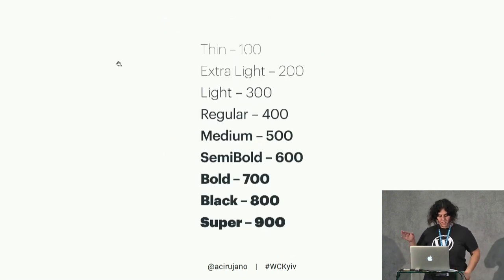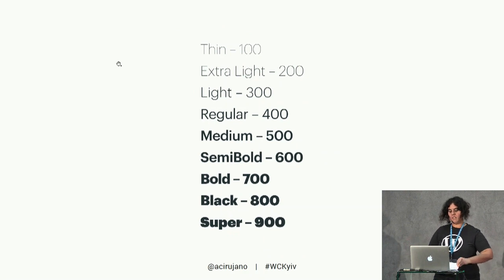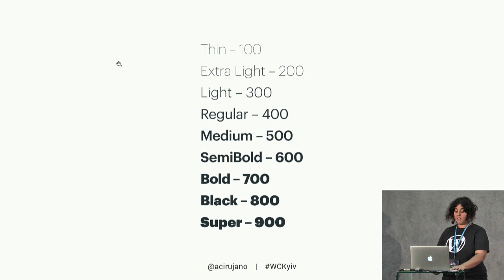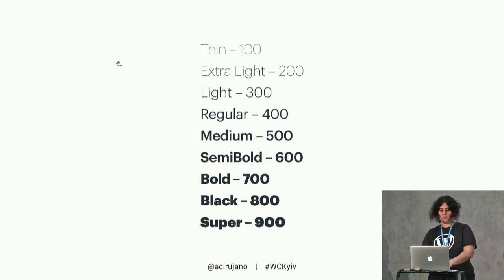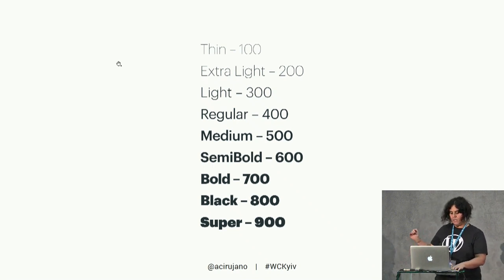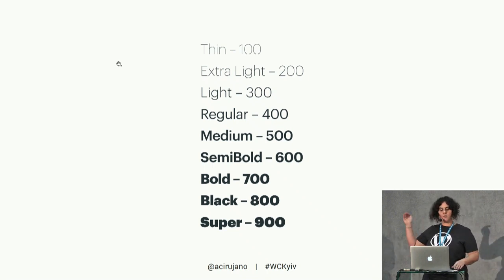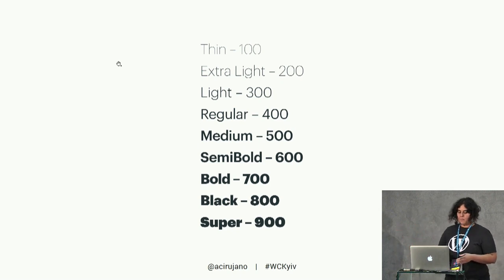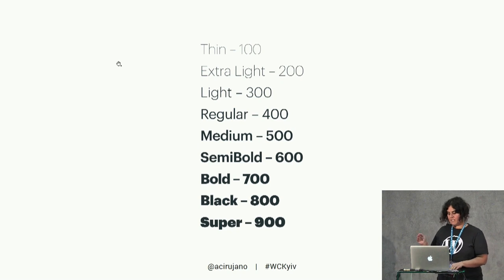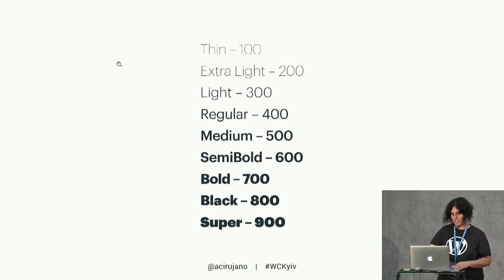For a better understanding, these are the weights you can set using a standard font. Using variable fonts, you don't just have those individual master weights — you have access to all of the values in between. You can set 102 or 547, because the axis can be interpolated. So using CSS, we can animate these values to get smooth transitions.